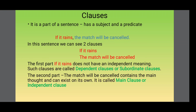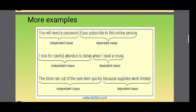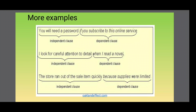We call it the main clause or the independent clause. Look at the given examples. In the first sentence: 'You will need a password if you subscribe to this online service.' The second part, 'if you subscribe to this online service,' cannot stand on its own and therefore it's a subordinate clause or dependent clause, whereas the first part, 'you will need a password,' can stand on its own and is an independent clause.